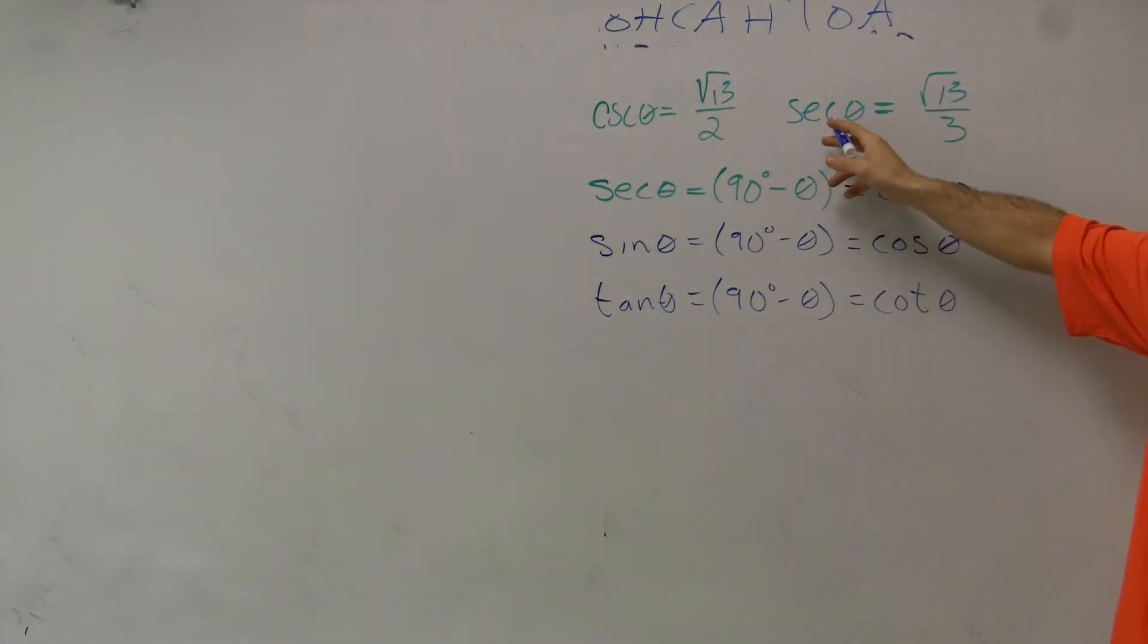So if they say the secant of theta is pi over 3, let's just go and write that over. The secant of theta...